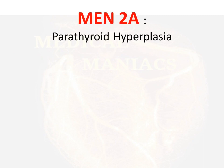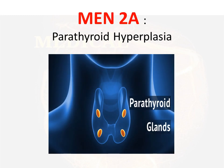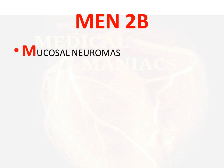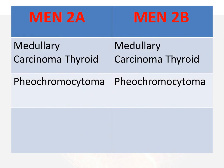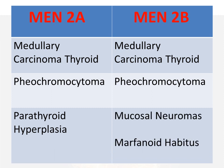What differentiates MEN2A from MEN2B is parathyroid hyperplasia in MEN2A — note that parathyroid hyperplasia is also seen in MEN1. In MEN2B, however, we have two other external features that start with the letter M: mucosal neuromas and marfanoid habitus.